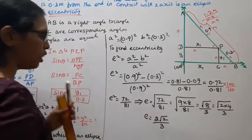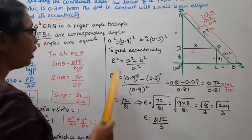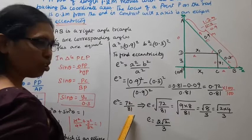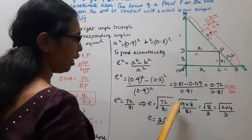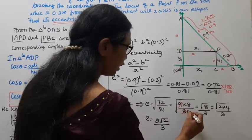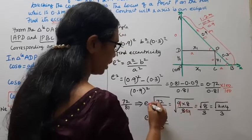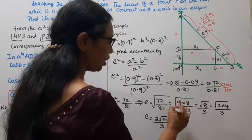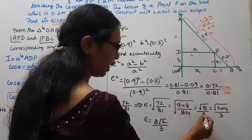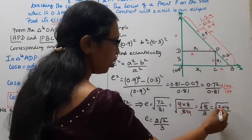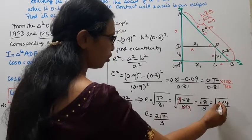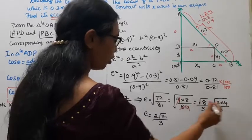e equals square root of 72 by 81. Simplifying: square root of 8 by 9 equals 2 square root of 2 by 3. The eccentricity is 2 root 2 by 3.